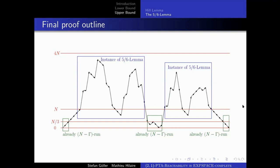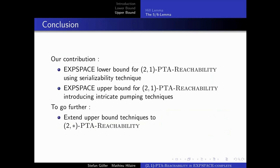To conclude, our contribution consists of two bounds. First, a lower bound making use of results from complexity theory — the technique of serializability and the fact that we can quickly translate numbers from Chinese remainder representation to binary representation. Then an upper bound using de-pumping techniques to modify a given run. This complexity result concerns 2-1 PTA reachability, a subset of PTA reachability for PTAs with two parametric clocks and arbitrary numbers of parameters and non-parametric clocks (2* PTA reachability). This result should be viewed as a first step toward analyzing the complexity of the more general model.